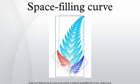Sometimes the curve is identified with the range or image of the function, instead of the function itself. It is also possible to define curves without endpoints to be a continuous function on the real line.